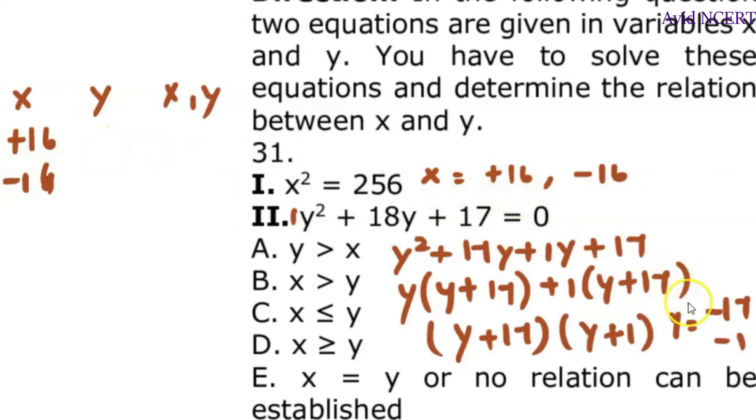For positive 16 and negative 17, positive 16 and negative 1, again negative 16 and y is minus 17, and again negative 16 and negative 1.